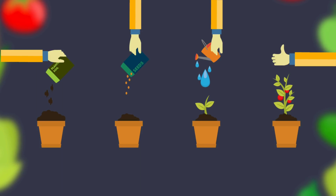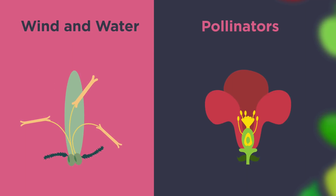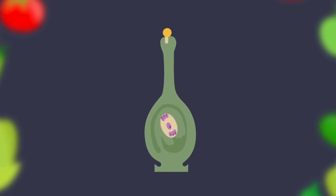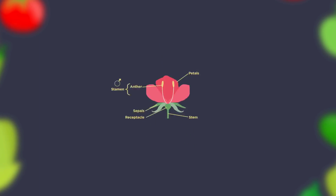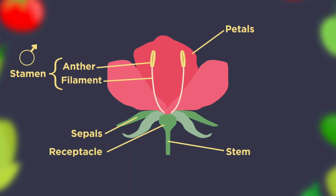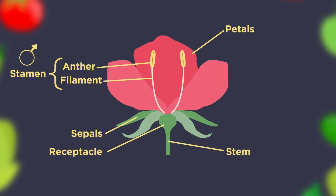So there we have sexual reproduction in plants. Pollination has to happen before fertilization. The male pollen is produced in the anther, where it is then dispersed during pollination. The female parts of the flower are the stigma, style, and the ovary.